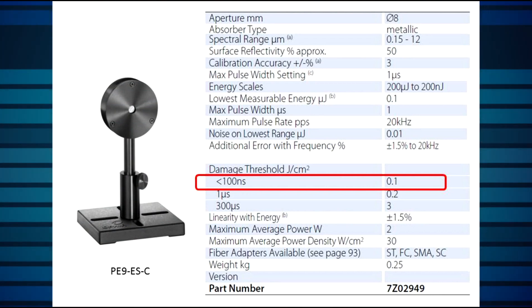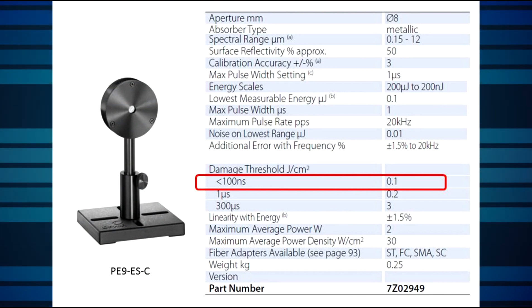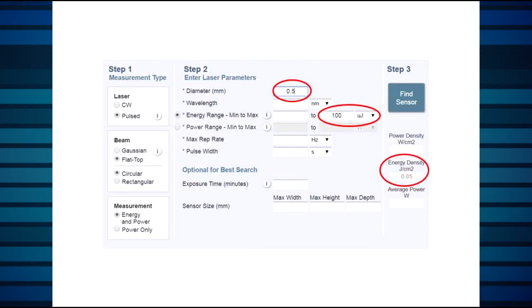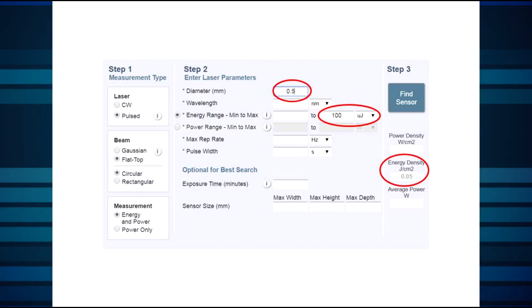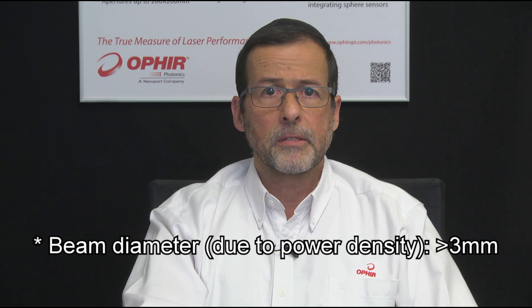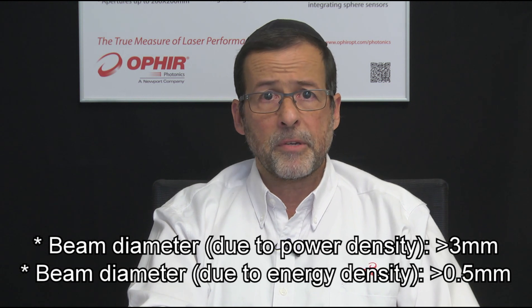For a 10 ns pulse width, the PE9ESC's rated maximum energy density is 0.1 joules per square centimeter. Taking the safety margin, we want to limit ourselves to 0.05 joules per square centimeter. We can see that we reach that energy density for 100 microjoule pulses when the beam diameter is 0.5 millimeters. The worst case for average power required at least 3 mm, while the worst case for energy can live with anything over 0.5 mm. So maximum average power density is our limiting factor.